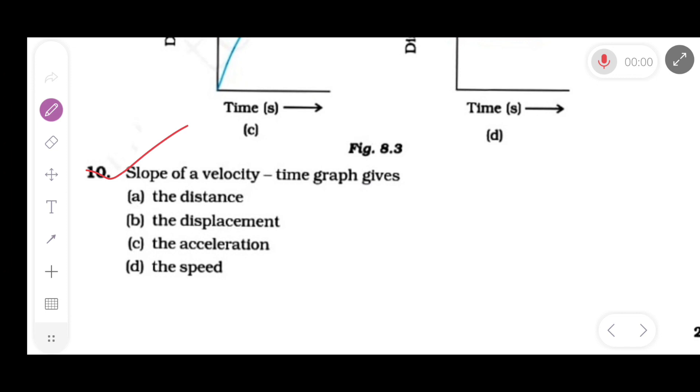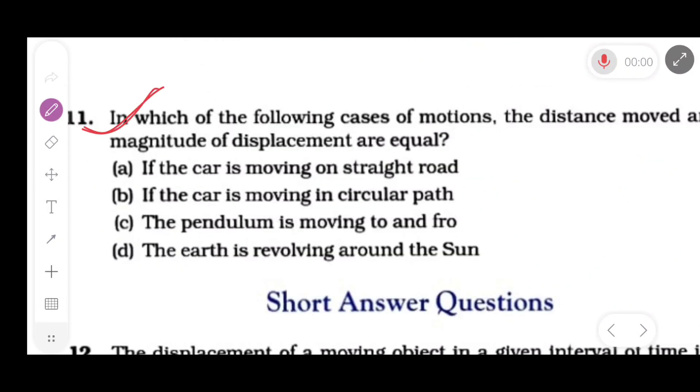Question number 10. The slope of velocity-time graph gives. The slope of velocity-time graph is the ratio between velocity and time. Now velocity and time ratio is the acceleration. This is the correct option. Now question number 11. In which of the following cases of motion the distance moved is equal to the magnitude of displacement? If a particle moves in a straight line path in same direction, then magnitude of displacement and distance are equal. Our correct option is if the particle is moving with straight line road.